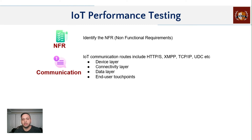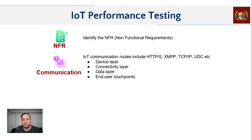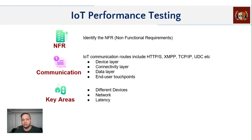You need to understand how much data is sent from devices to the gateway and how much gets processed to the cloud. This end-to-end communication often includes TCP, HTTPS, or UDP protocols. You really have to understand the layers: from the device layer to connectivity, to the data layer, to the end user touchpoints. These layers all come into picture in communication.